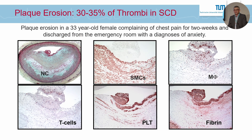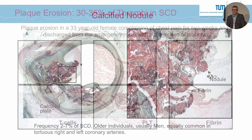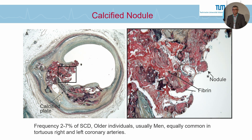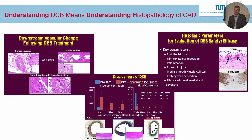Erosion: here you see absence of endothelial cells that tends to undergo superficial erosion with subsequent thrombus formation. The least frequent is calcified nodule — however, extremely important these days because we have tools to treat these patients. But you can see how much calcium there is and how stiff and hard it is to treat these vessels once they're calcified.